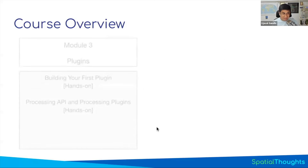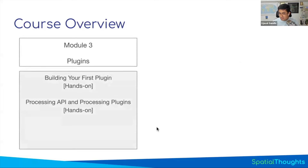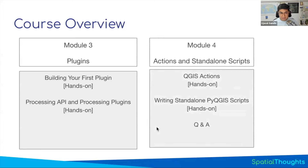Once you've learned all of that, the third module teaches you how to package everything and ship it to other users. Whatever you've learned — how to add a button, trigger processing on click — you'll learn how to package it into a plugin and deploy it. You'll build two plugins: first learning the basics with a simple plugin, then building a real plugin using the processing API. Finally, in the last module, we'll cover actions — another way to distribute code you've written for customization.